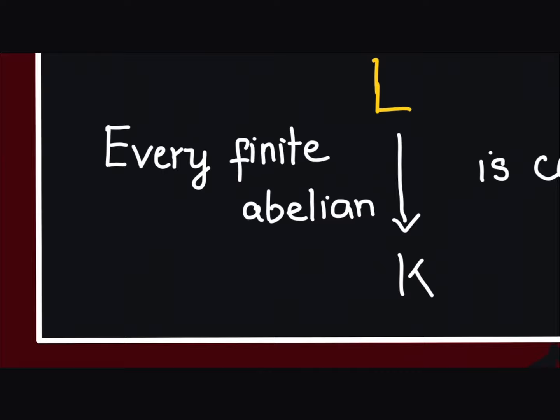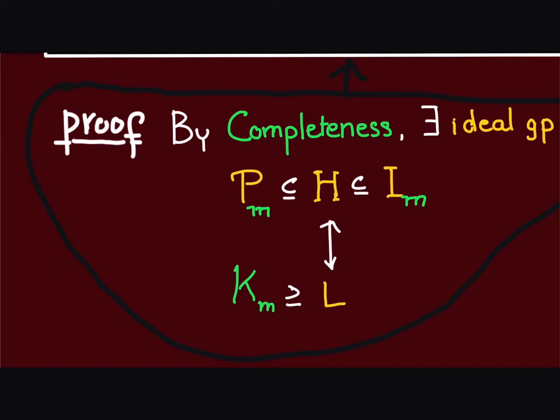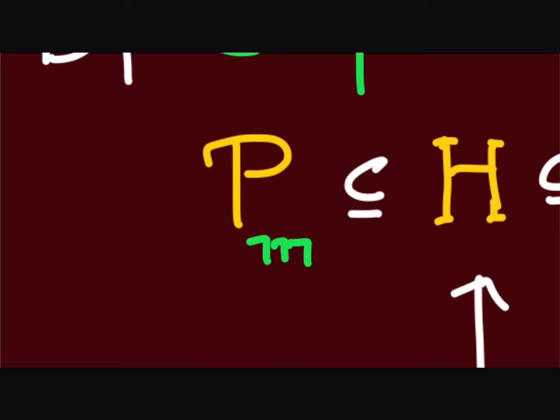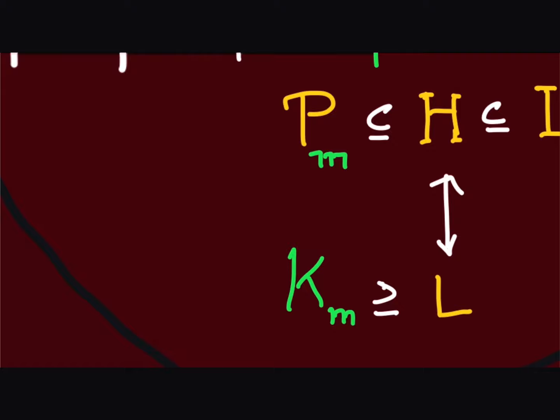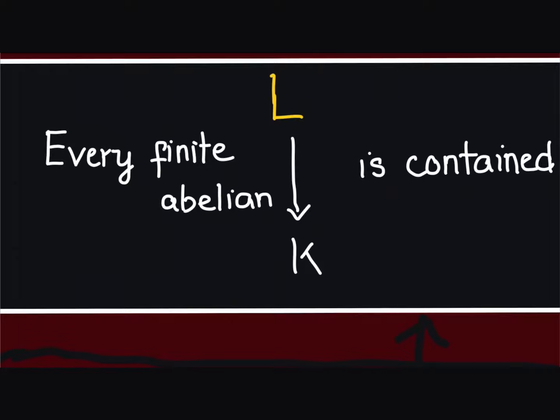Coming back, given a finite abelian extension l over k, we have assumed h is the ideal group corresponding to l. By definition of ideal group, h must contain P_m, and therefore l must be contained inside the class field of P_m, which is by definition the ray-class field of m.